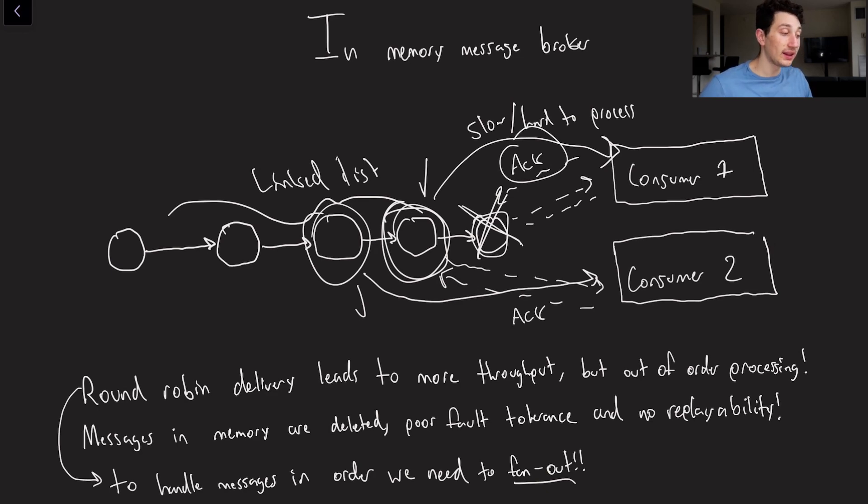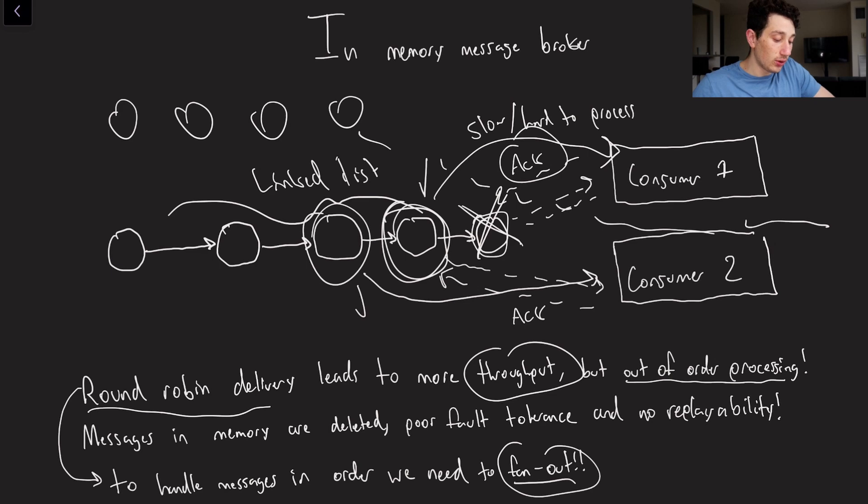So what's the general conclusion of something like an in-memory message broker? Well, basically, we're using round robin delivery in order to maximize our throughput. But what that can lead to is out of order processing. The only way to ensure getting in order processing is by doing something called fanout, where instead of having multiple consumers for a given queue, what we would actually do is make a second queue over here. This could be a second partition, for example. And then we would have consumer one exclusively reading from this top queue, consumer two exclusively reading from the bottom queue. But that kind of defeats the point, because we want to maximize our throughput.